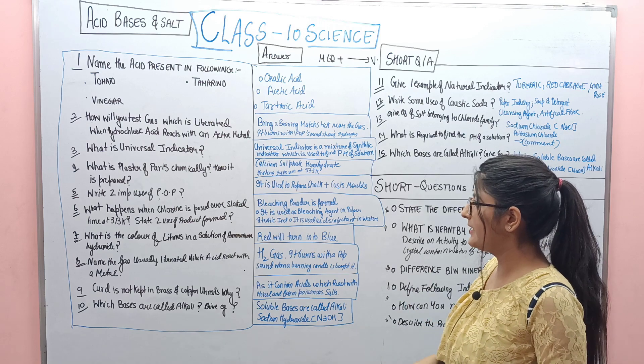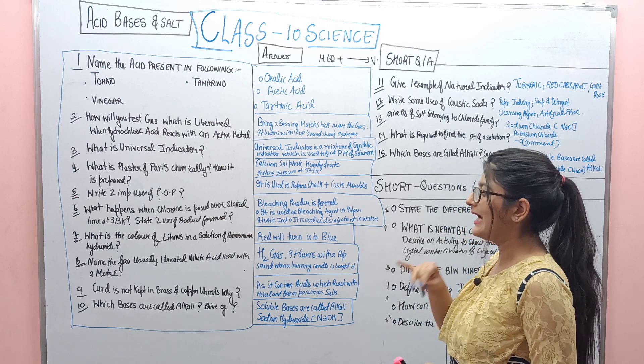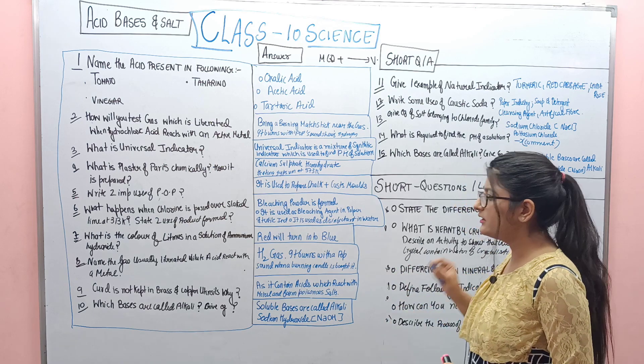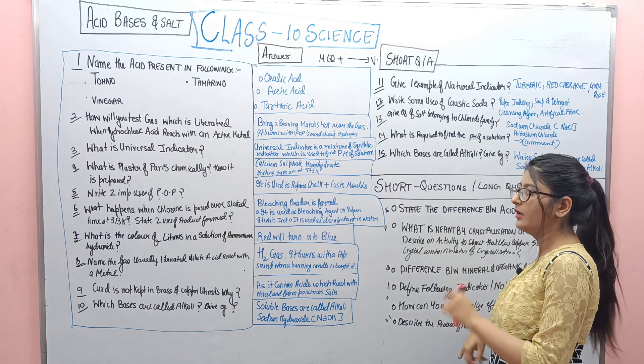Next question: What happens when chlorine is passed over slaked lime at 313K? State two uses of the product formed.